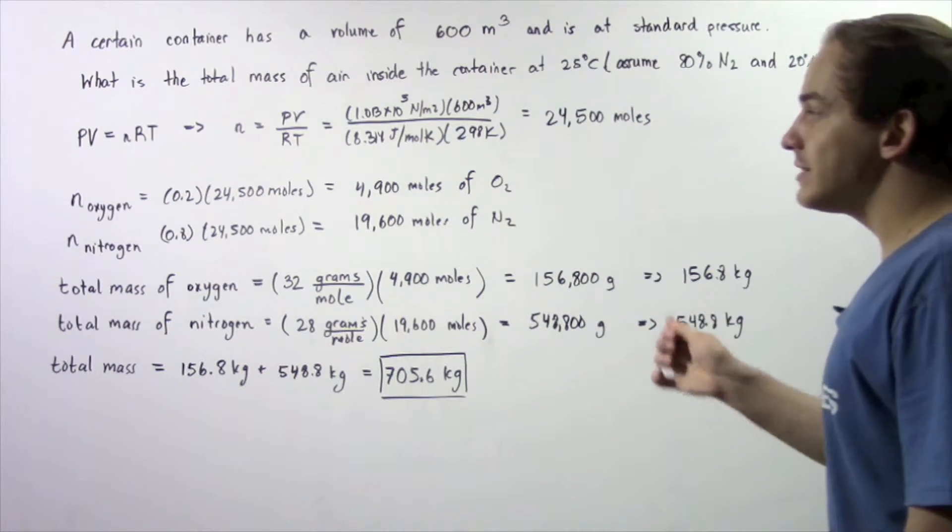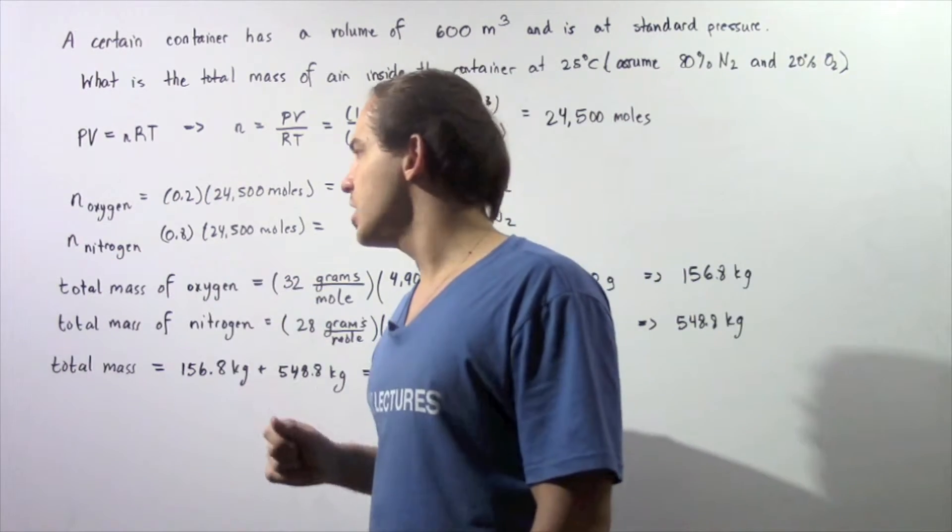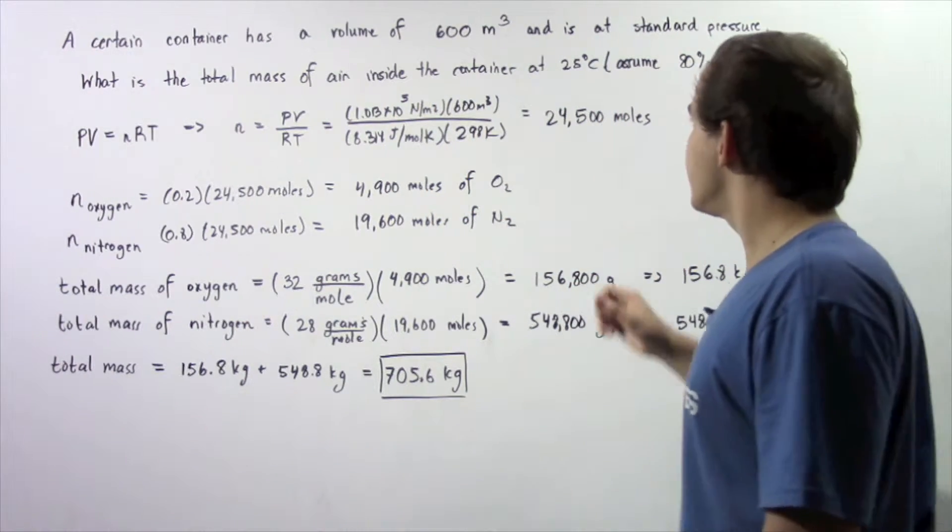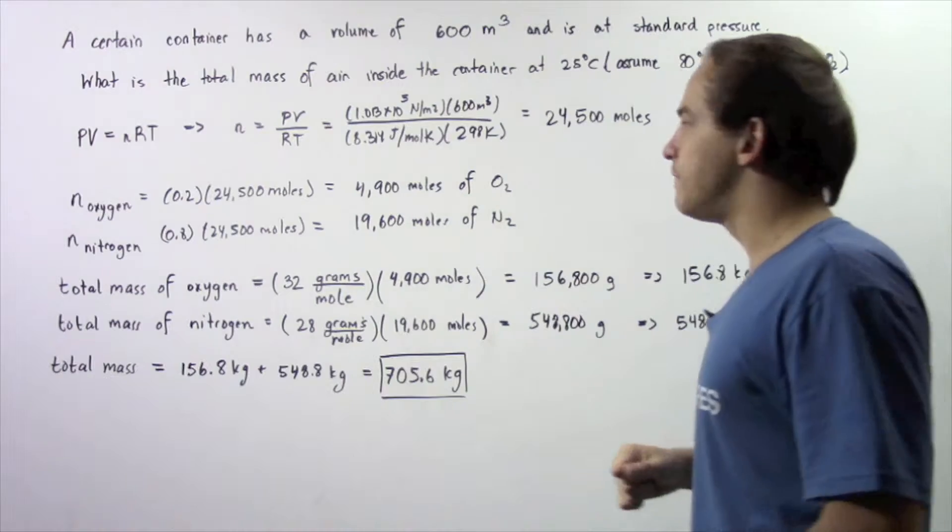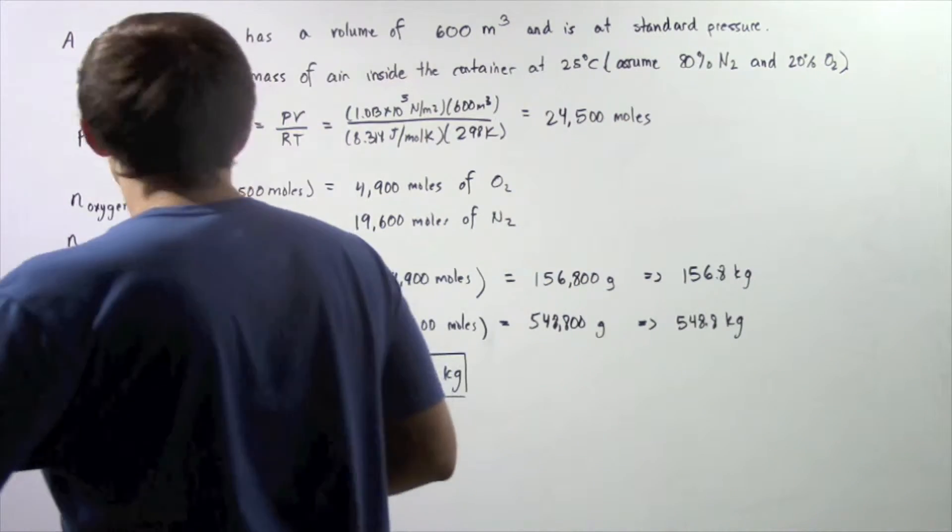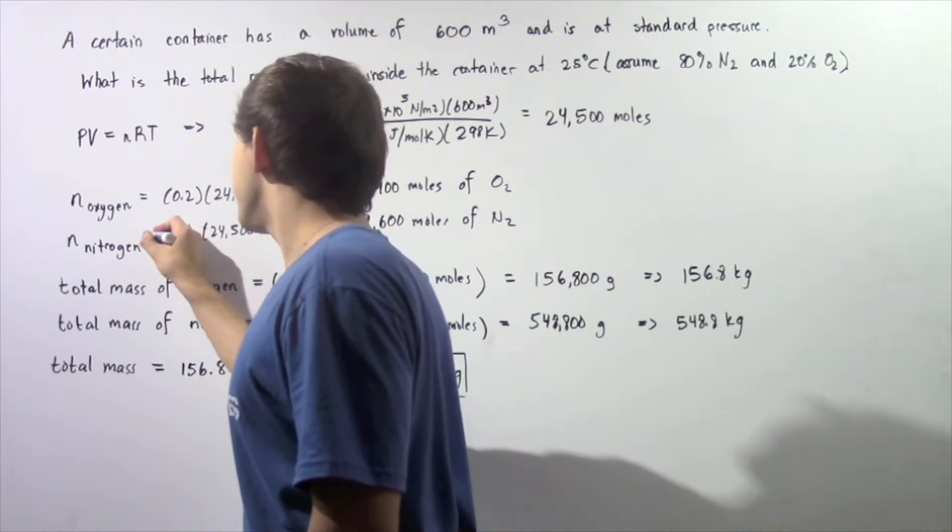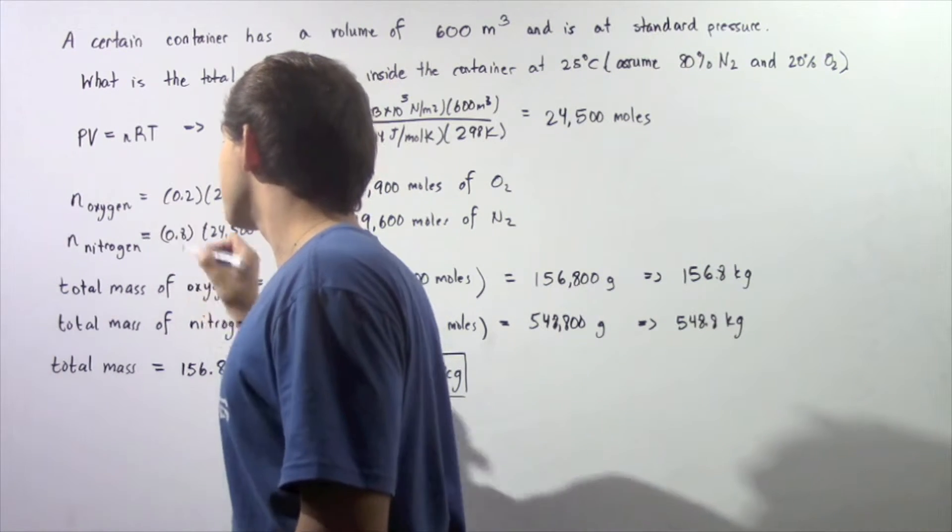Likewise, to find the number of moles of nitrogen, we take 0.8 and multiply by 24,500 and we get 19,600 moles of nitrogen inside our container.